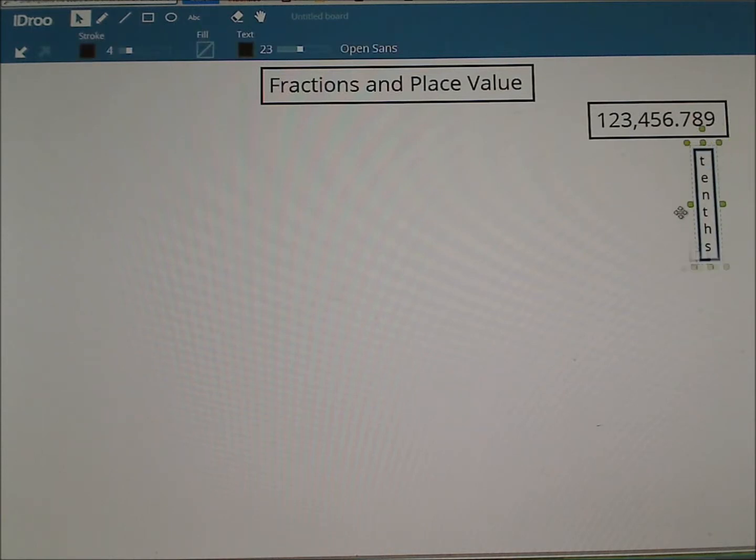The 8 is in what we call the hundredths place. And the 9, can you guess? That's right, it is in the thousandths place. So now that we've reviewed place value, let's take a look at how we can take a fraction and turn it into a decimal using place value.